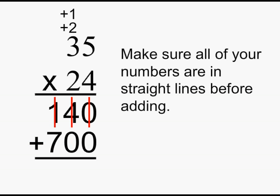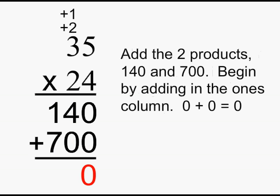Make sure all of your numbers are in a straight line before adding. Add the 2 products 140 and 700, but first you will begin by adding in the ones column.